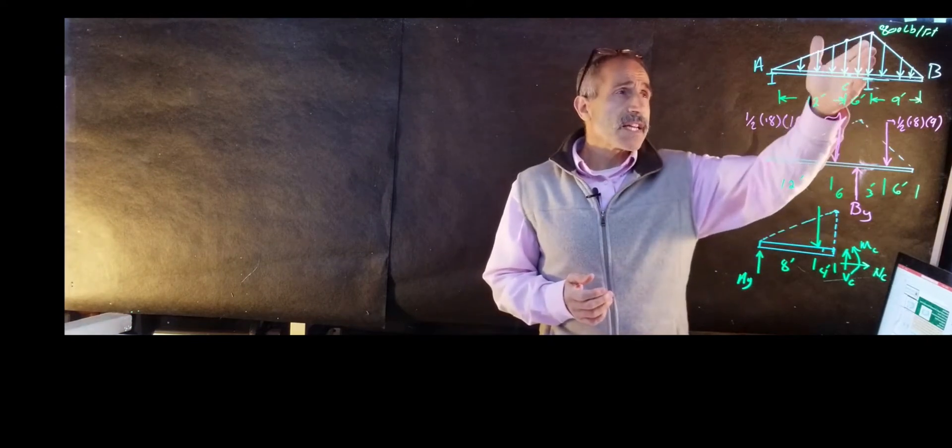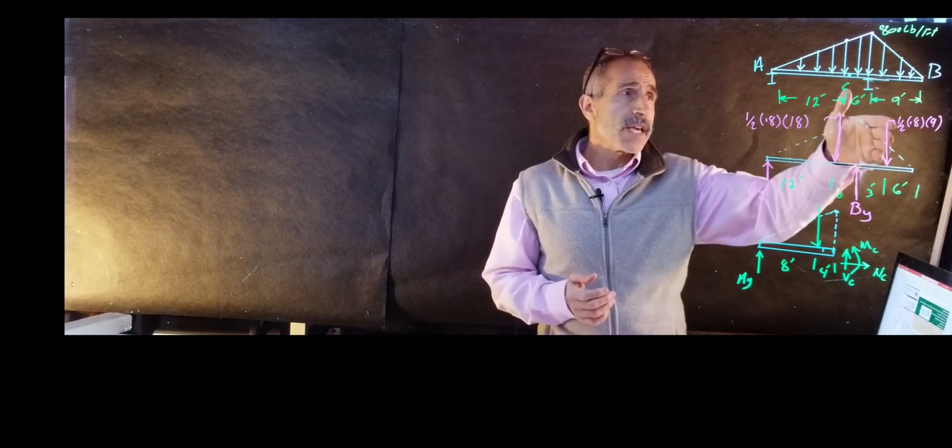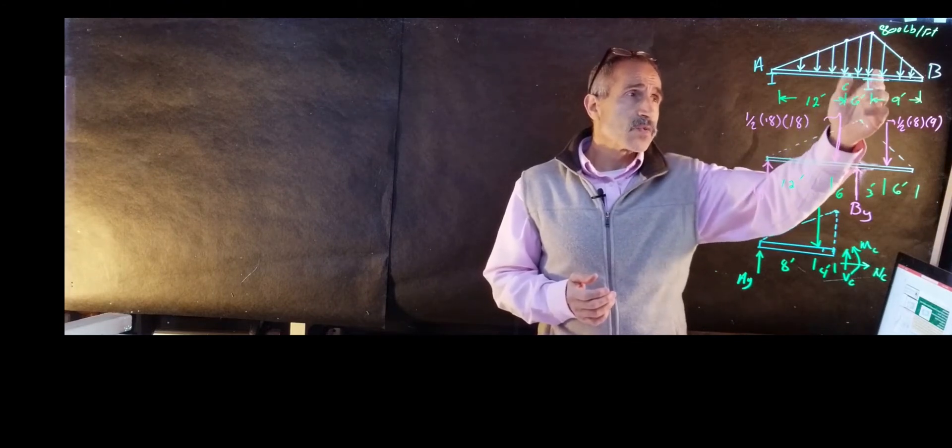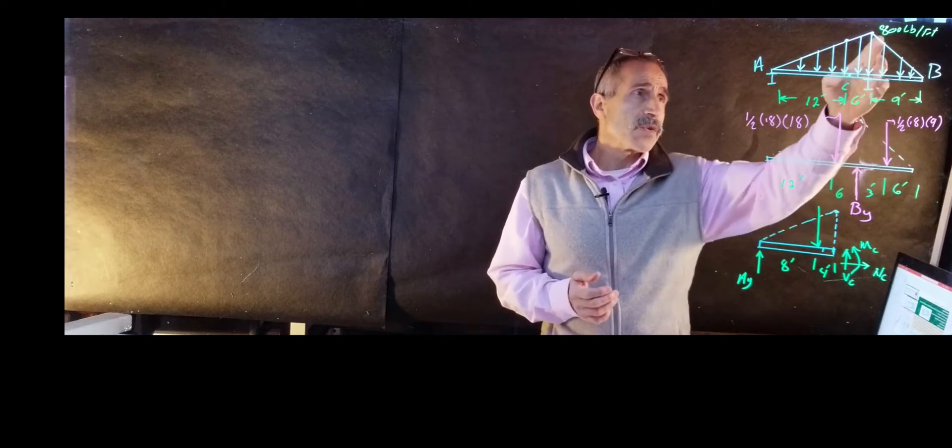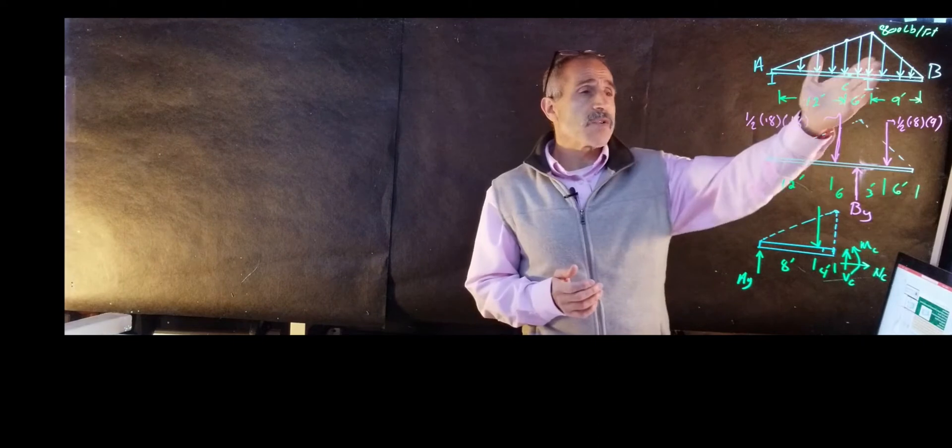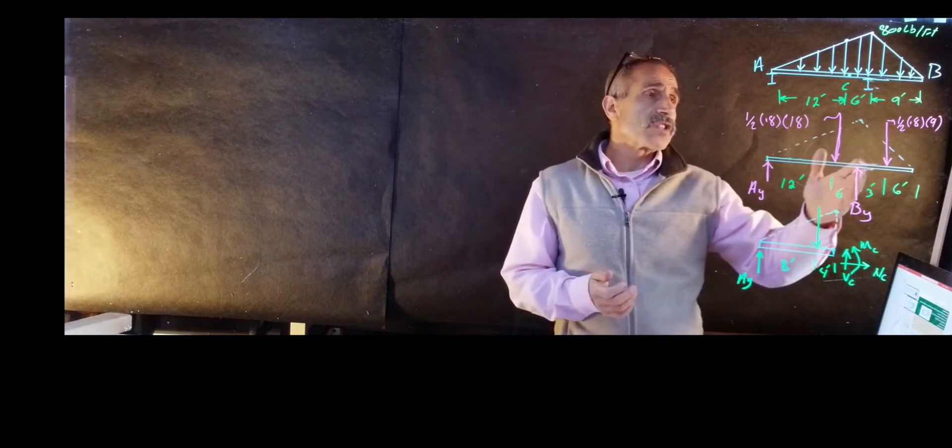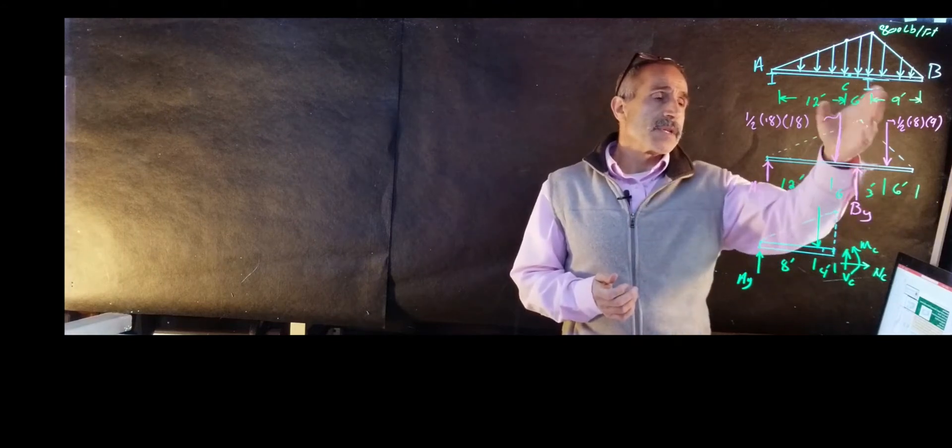Then we're going to go ahead and use the second half of the triangle, do the same thing, convert it to a concentrated load. When you do that, it becomes the area underneath that triangle, which is one half of 0.8 or 800 times nine. We're going to convert the pound per kips. And the location of it again is one third from the base, which comes out three feet from here.